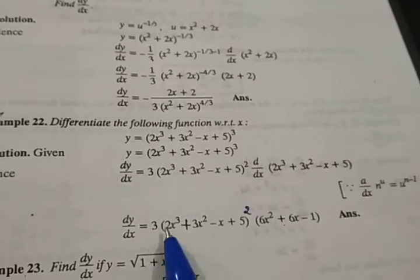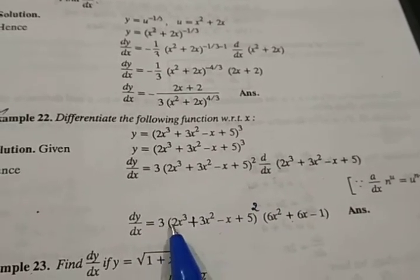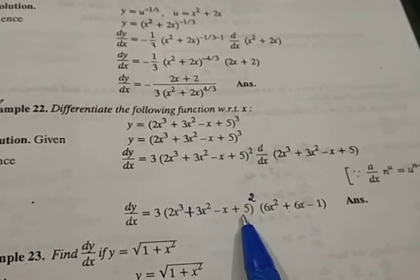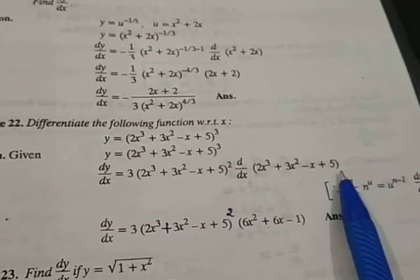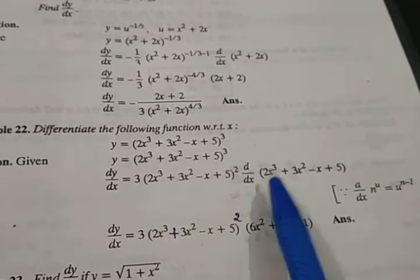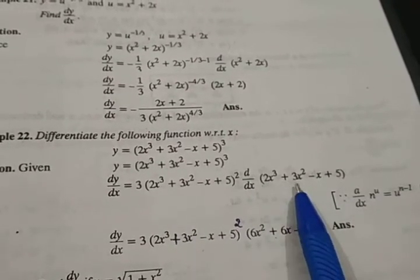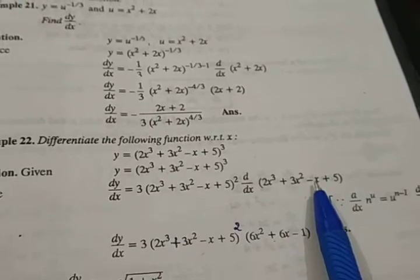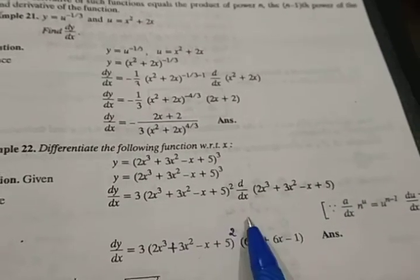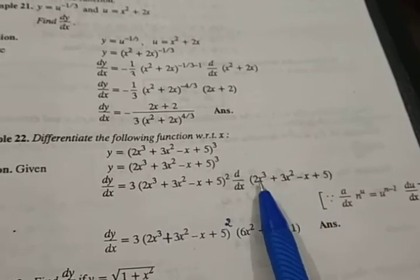Which is equal to, so ahead then you will solve this. 3 into, this you write as such, raised to power 2, into, this is the derivative of the bracket. So that means you break this up, that means into derivative of this, plus derivative of this, minus derivative of this, plus derivative of this. So ahead in the next step, you can solve this.